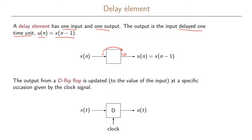A special case of the delay element that we are interested in is the d flip-flop. The d flip-flop is updated at a specific occasion given by a clock signal, which is used to define our time units. We have the input x(t) to our d flip-flop, and when a clock signal arrives, the value at the input to the d element is moved to the output. So the d element separates input from output, and when the clock signal is sent, the input is shifted to the output.